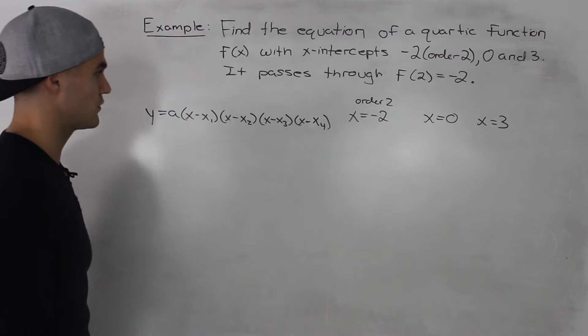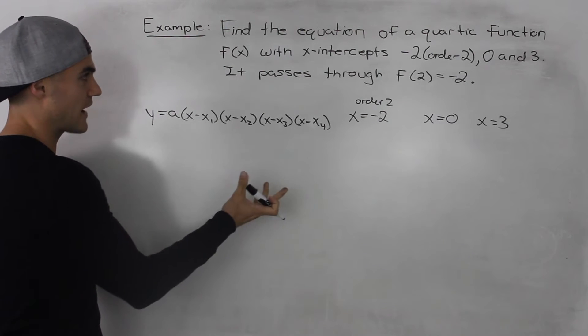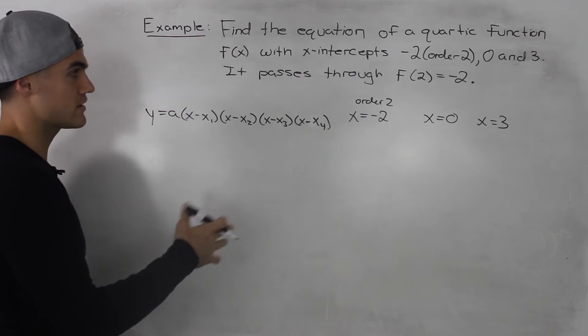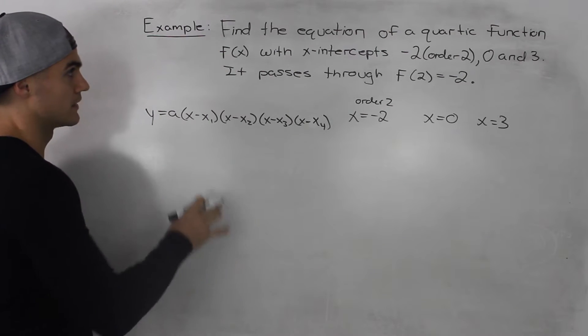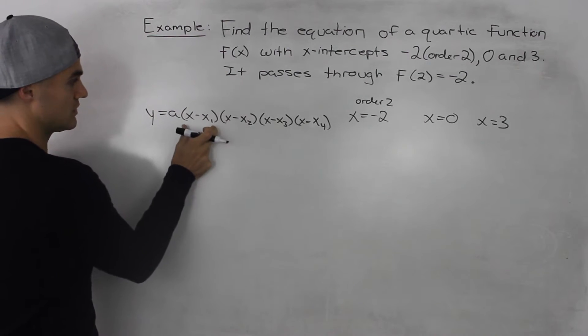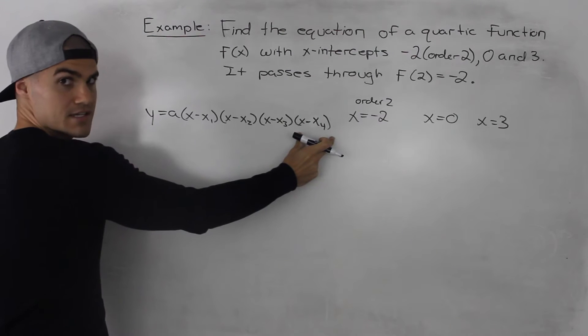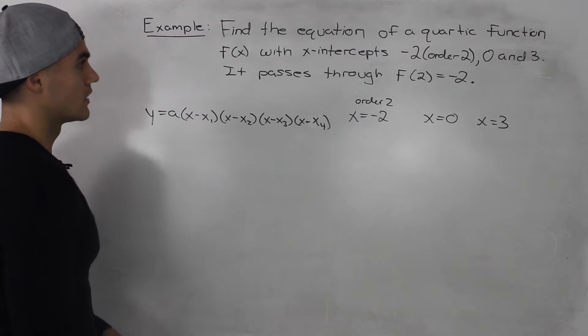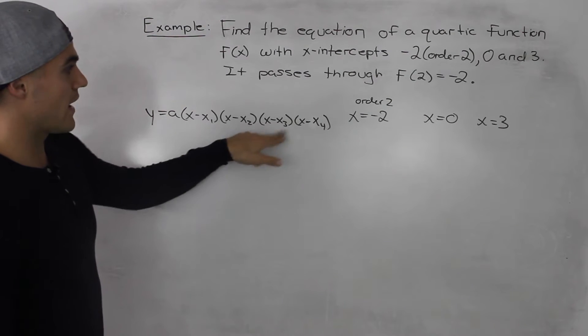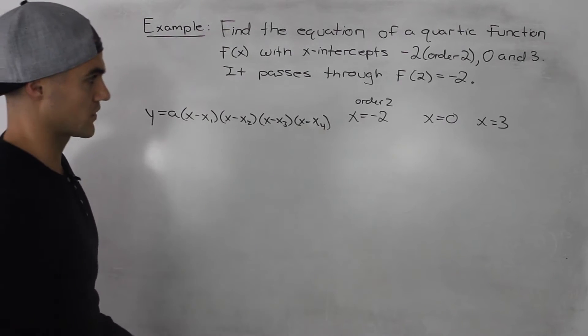So as we did in the question before, I'm going to give this equation in factored form because it's easier to work with since we have the x-intercepts. Since this is a quartic function, I've got four brackets here I've got to figure out.